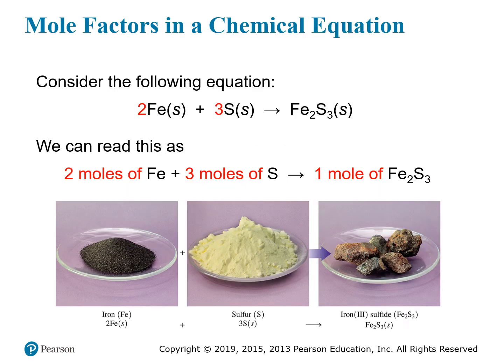Let's look at a slightly different example to see the mole factors in a chemical equation. Here we have a reaction between iron and sulfur: iron plus sulfur yields iron sulfide. Iron sulfide has the particular formula it has because of the ions that make it up — this is iron 3 sulfide, with a Roman numeral 3 indicating that iron is in a plus 3 charge state. You have two iron atoms, which are two Fe³⁺ ions, and three sulfur atoms, which are three S²⁻ ions. Together these make up one unit of iron 3 sulfide — that's how their charges balance, giving the lowest whole number ratio for a neutral compound.